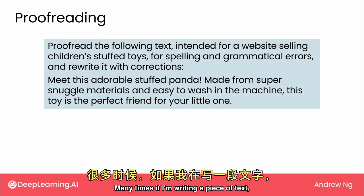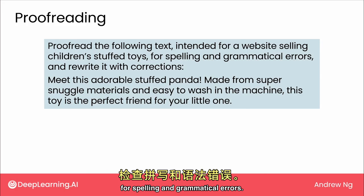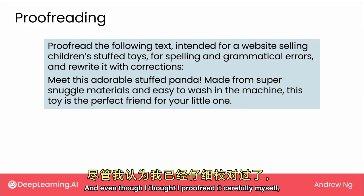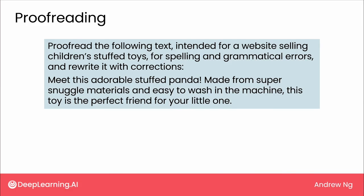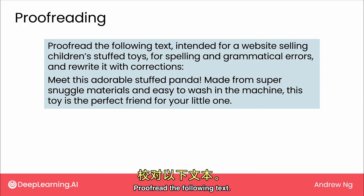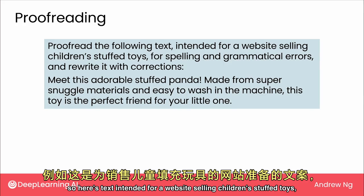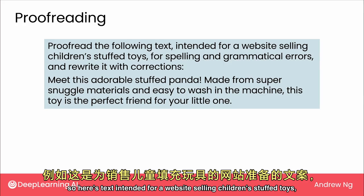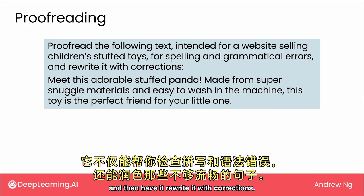Many times if I'm writing a piece of text, I will read through it carefully three or four times myself for spelling and grammatical errors. And even though I thought I proofread it carefully, a large language model will still find errors that I had missed. Here's an example of a prompt you could try: 'Proofread the following text.' I find that if you tell it what the text is for — for example, text intended for a website selling children's stuffed toys — and ask it to check for spelling, grammatical errors, and awkward sentences, and then have it rewrite with corrections, that works well.